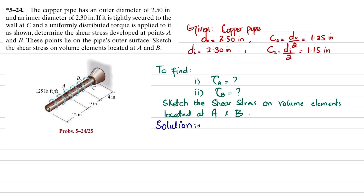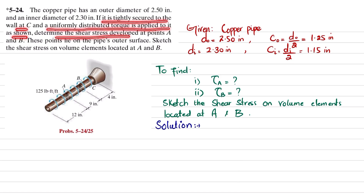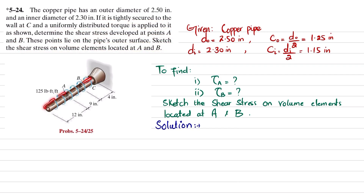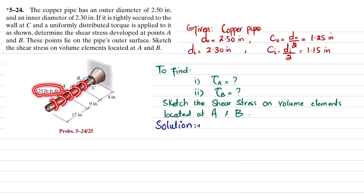Welcome back, problem 5-24. The copper pipe has an outer diameter of 2.50 inches and inner diameter of 2.30 inches. It is tightly secured to the wall at C, and a uniformly distributed torque of 125 pounds·feet per feet is applied to it. Determine the shear stress developed at points A and B, where point A lies on the pipe outer surface, and sketch the shear stress on volume elements at A and B.